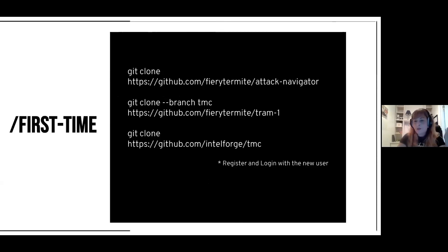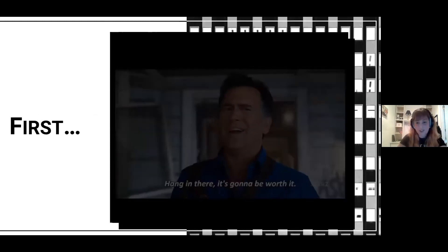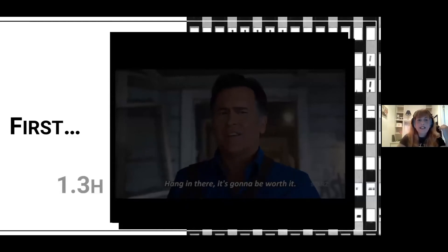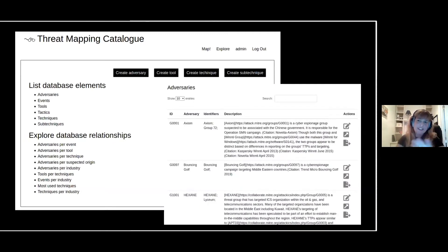The first thing you'll need to do to use the app is clone a modified ATT&CK Navigator repo, a modified TRAM repo, and the app repo itself. After registering and logging into the application, you'll need to access the path for the first time. Then you will have to wait — and wait some more — because mapping everything and creating all the relationships for ATT&CK takes about one and a half hours, depending on your internet connection. But after that, you'll have something like this where you can explore everything in ATT&CK fairly easily with the table.